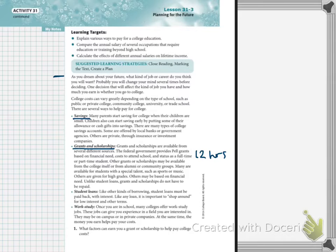Other grants or scholarships may be available from the college itself or from alumni or community groups. Many are available for students with special talents such as sports or music. Others are given for high grades. Others may be based on financial need. Unlike student loans, grants and scholarships, here's the key, do not have to be repaid.